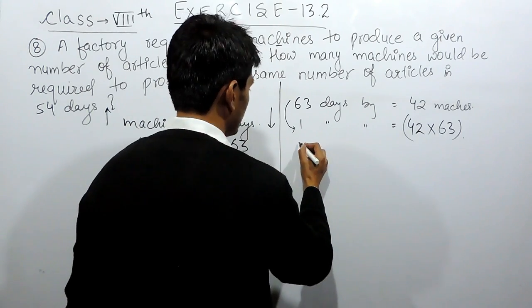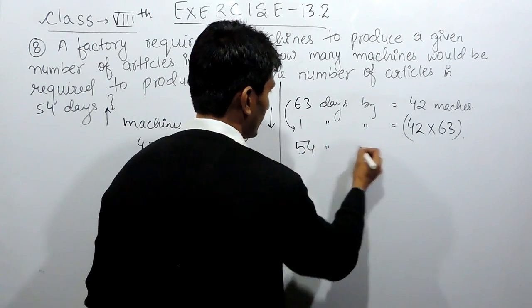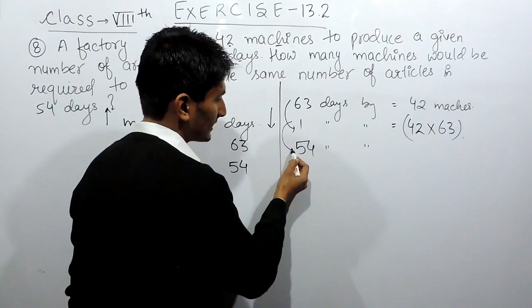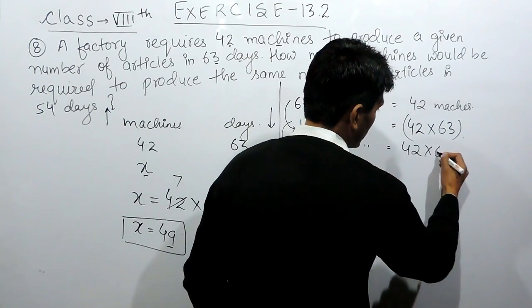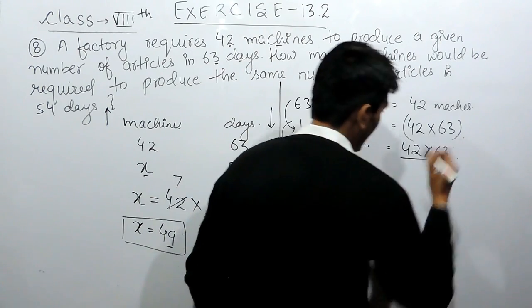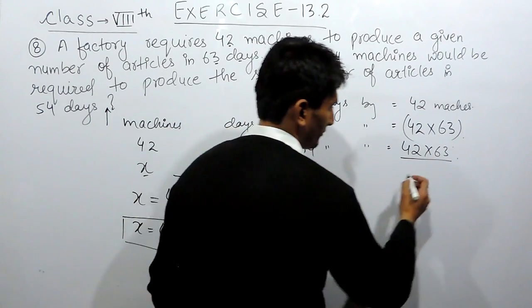Now, we have to complete this work in 54 days. The number of days are more, so obviously the number of machines will be less. So to decrease this, I have to divide this. So I have to divide this by 54.